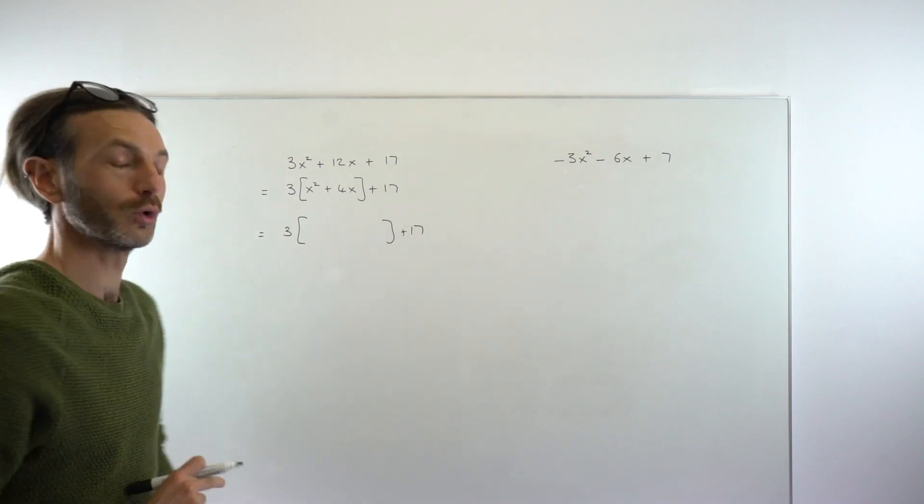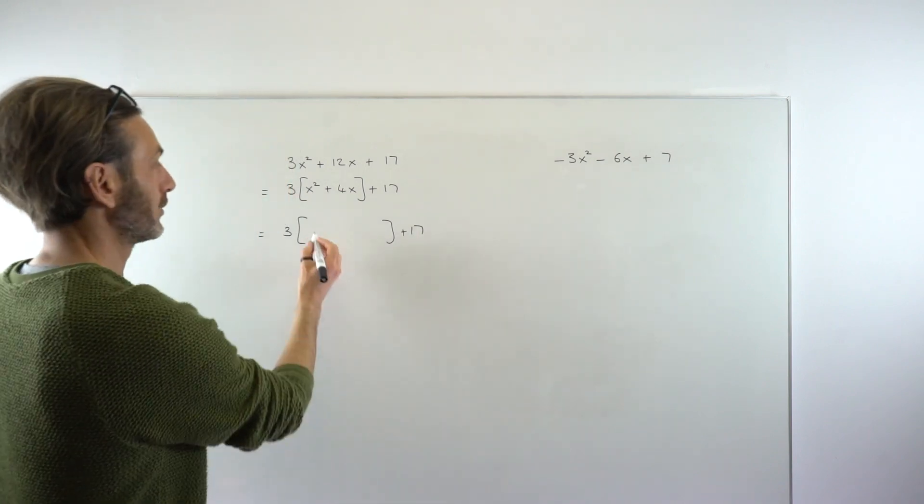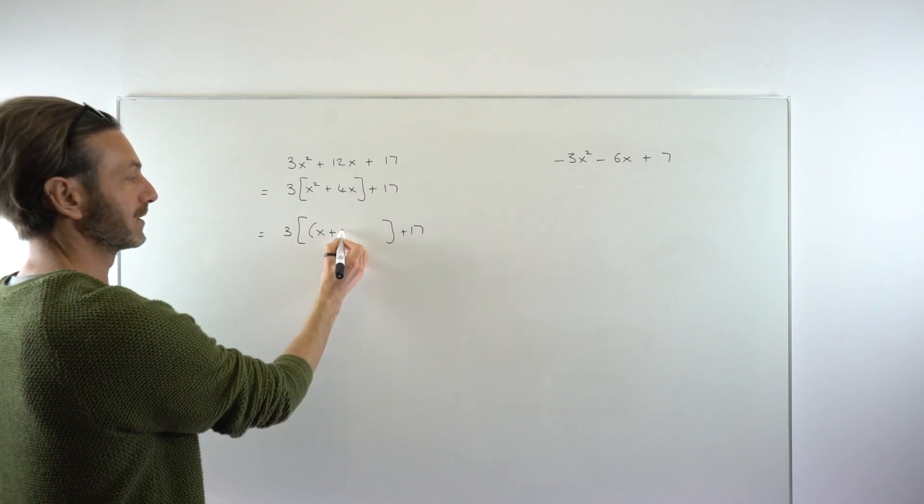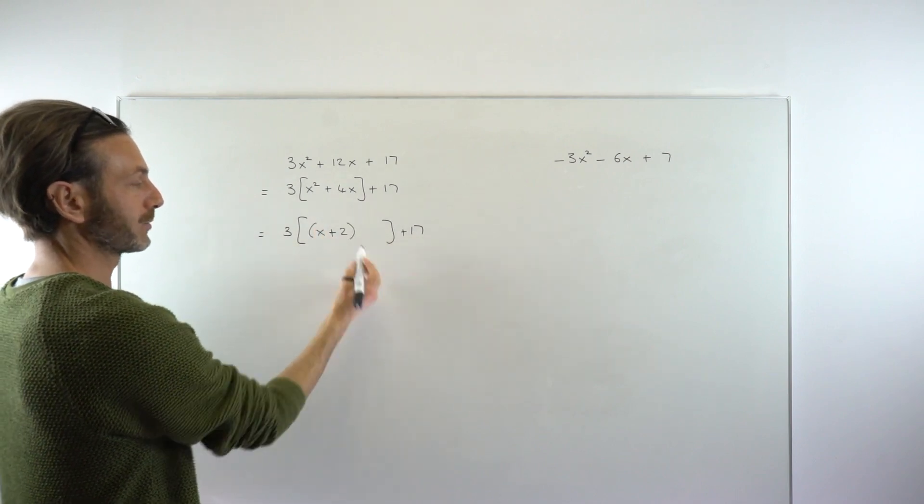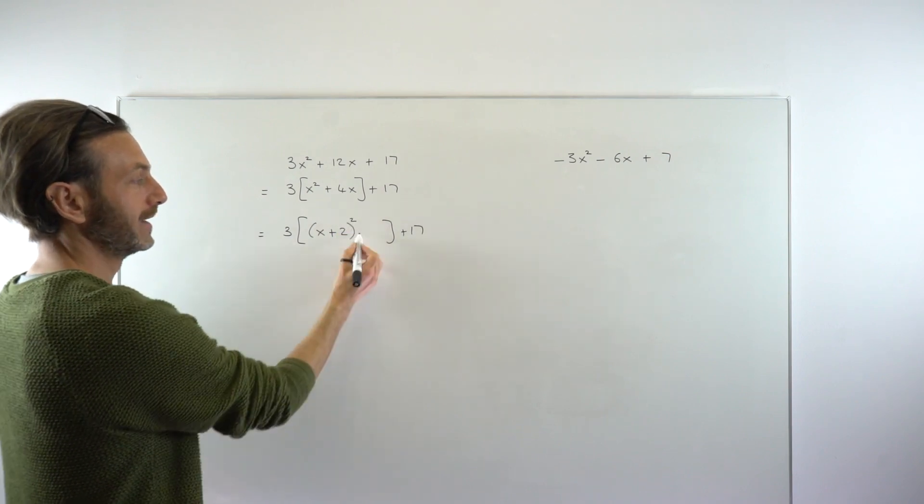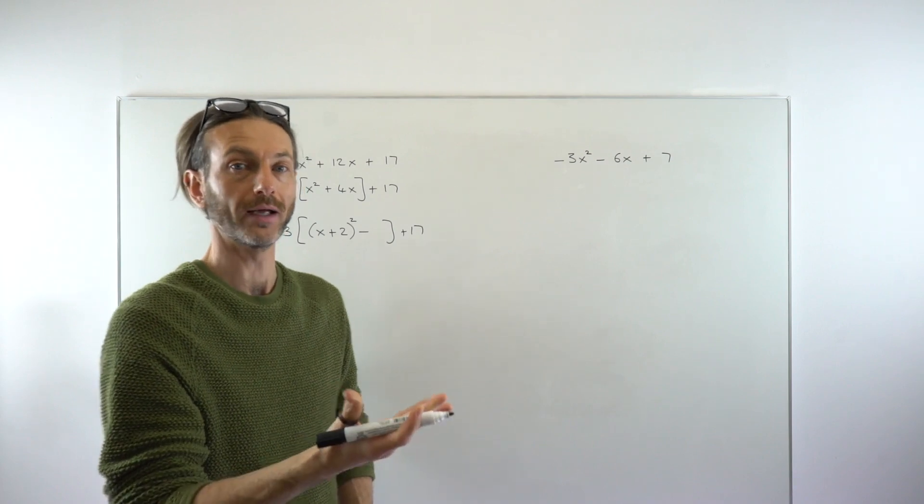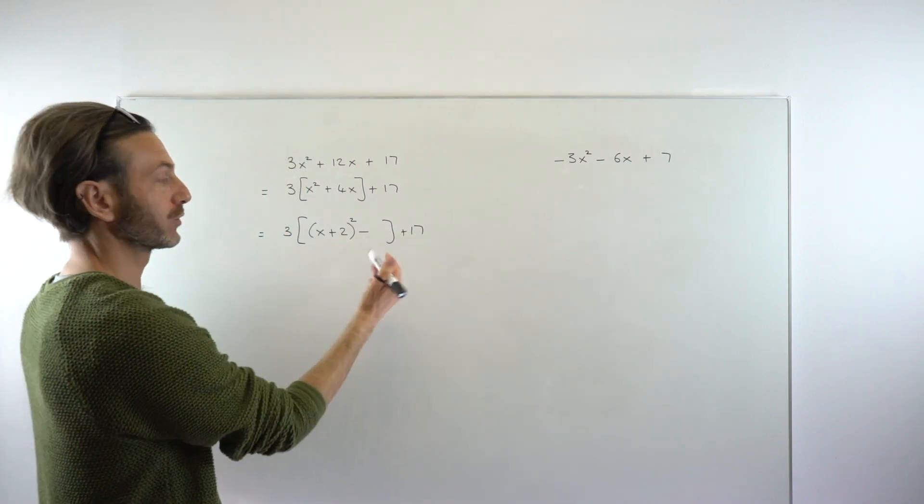The next step is really the completing the square part. We're leaving the three, the square bracket, and the 17 on the end. We want to do completing the square on x squared plus 4x. You take the coefficient of the x and half it, so x plus 2, put a squared on the bracket, and then subtract the number from that squared—minus 4.